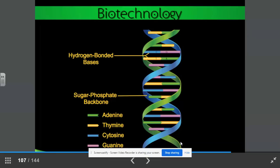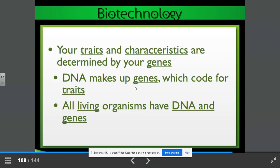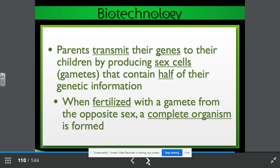Your traits and characteristics are determined by your genes. DNA makes up genes which code for traits. All living organisms have DNA and genes. Parents transmit their genes to their children by producing sex cells, known as gametes, that contain half of their genetic information. When fertilized with a gamete from the opposite sex, a complete organism is formed.